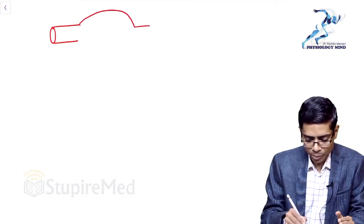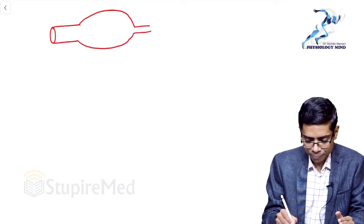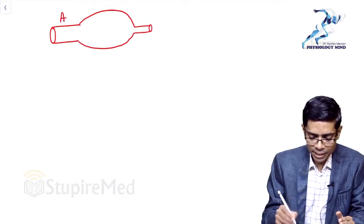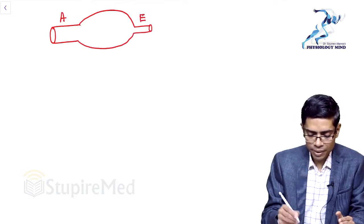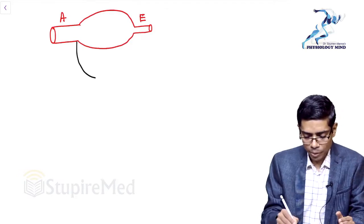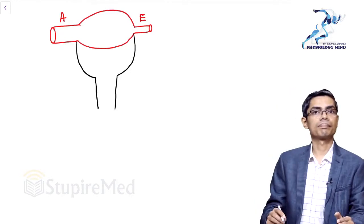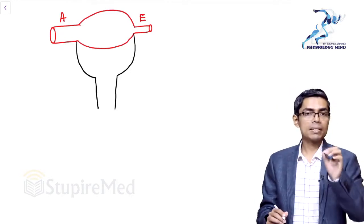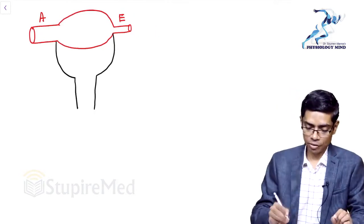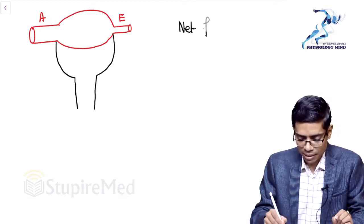Looking at the schematic diagram: this is your glomerular capillary, with the afferent and efferent arterioles and Bowman's capsule here. So what is the net force for filtration? We have to understand this concept of net force for filtration.